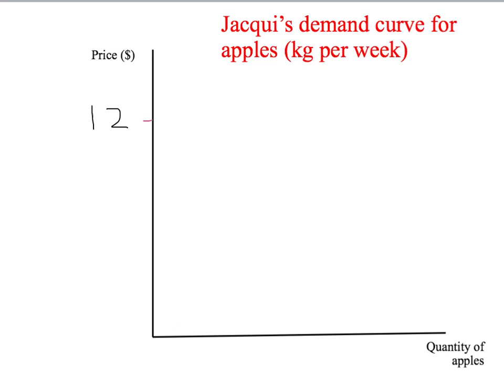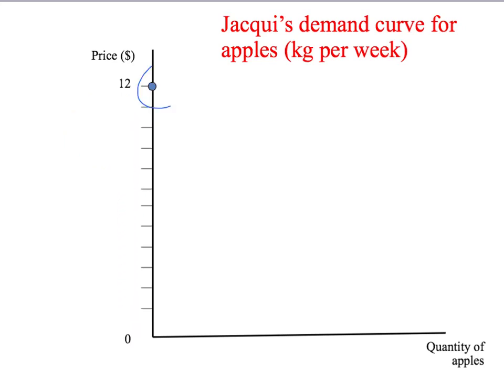Let's pick a first price — a nice high price to start off with, say $12 per kilogram. If we said to Jackie, 'Apples are $12 per kilogram, how many would you like to buy?' she'd say, 'That's just too expensive. I don't want to buy any apples at $12 a kilogram.' In that case, we have a point where the price is $12 per kilogram and the quantity is zero. That's going to be our first point on Jackie's demand curve.